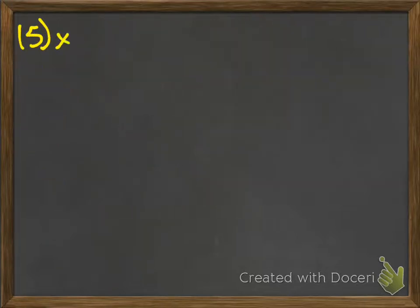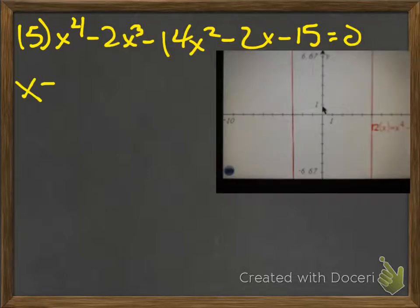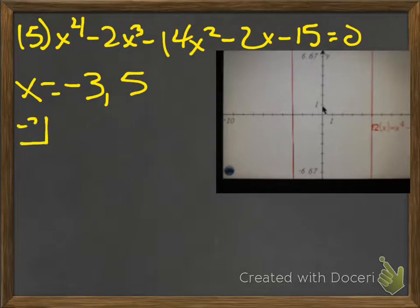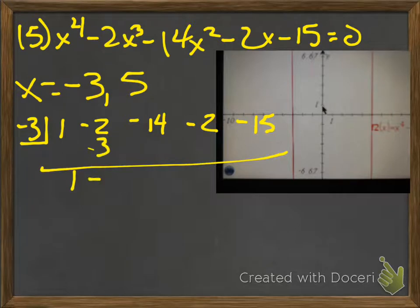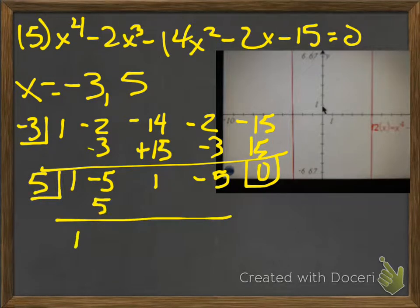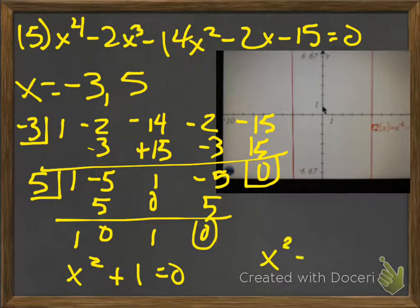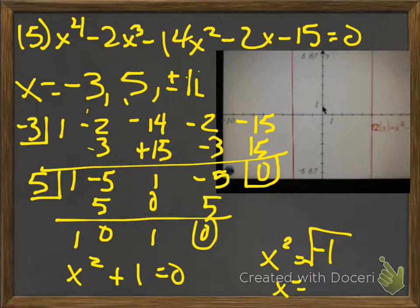Number 15 — same thing. The graph crosses two places, so I have two real answers and need two imaginary answers. It looks like negative 3 and 5. Go through synthetic division with negative 3 — I should get 0. Then do 5, which leaves me x squared plus 1 equals 0. Subtract 1: x squared equals negative 1. Square root of negative 1 is plus and minus i. So there are four answers: negative 3, 5, i, and negative i.